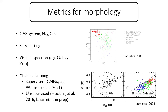There are other methods for distinguishing galaxy types, such as Sérsic fitting or visual inspection — done either by professional astronomers or via citizen science projects like Galaxy Zoo. More automated methods include supervised machine learning via convolutional neural networks. Another method that does not require a labeled training set is unsupervised machine learning, which is an area I'm currently also working on.